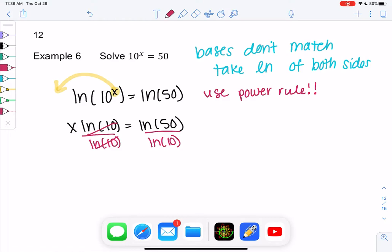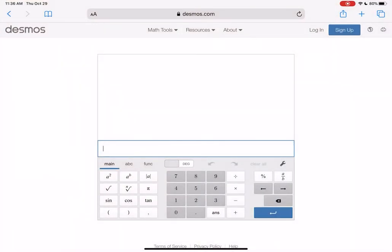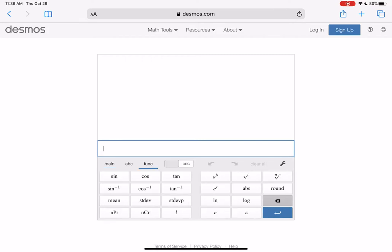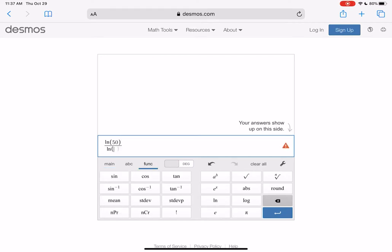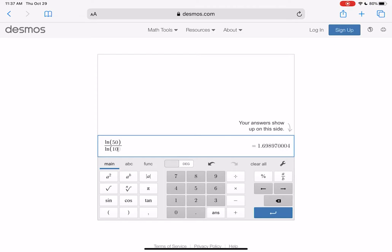And then we'll go ahead and calculate. If you don't have a calculator, the scientific one does most is nice. Just go over to function and we have ln of 10 and we have ln of 50 divided by ln of 10. And I got 1.6989.